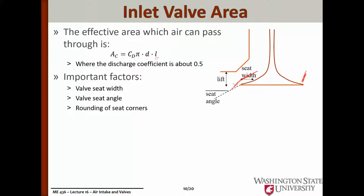The important factors in having a very high discharge coefficient — because we don't want to restrict the air into the engine — are the valve seat width, the angle at which the valve and cylinder head are in contact, and how smooth or rounded all of the edges are. The trade-off is that the more rounded we make everything, the harder it is to seal the valve when it's closed, which is more of a priority — you don't want air leaking out of the engine during the power stroke. So first it needs to have a very good seal and seating, then open up nice and wide as quickly as possible.